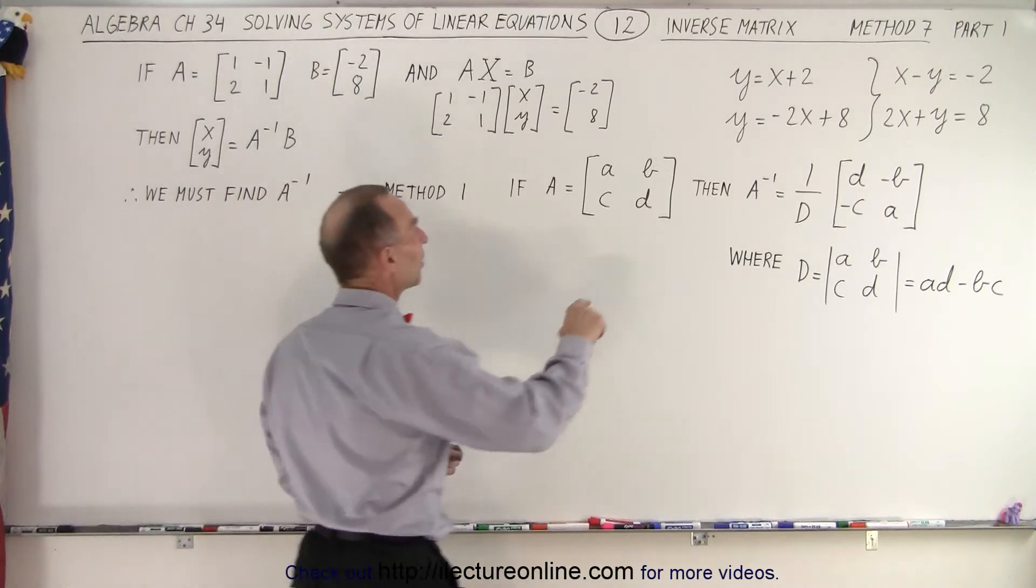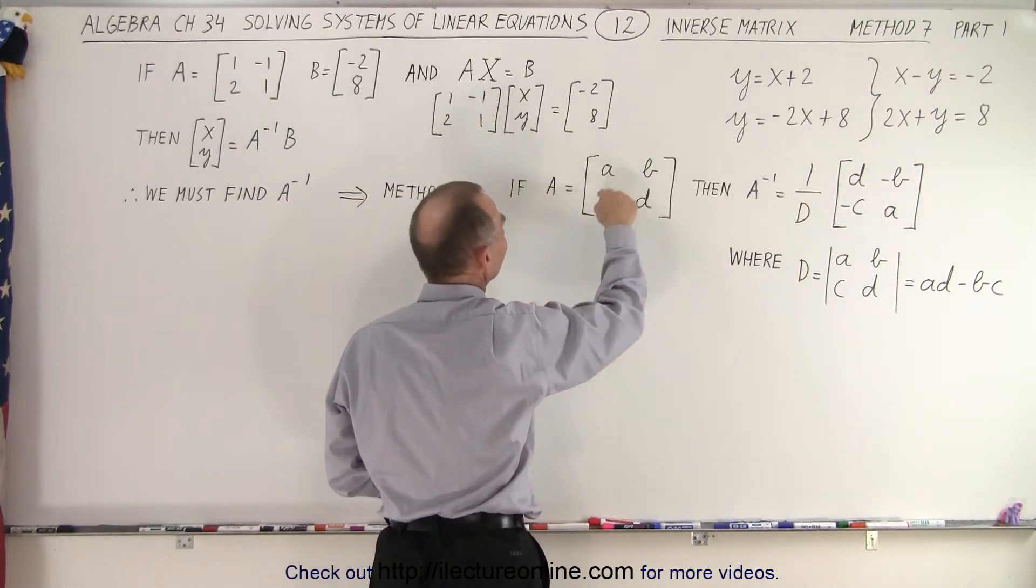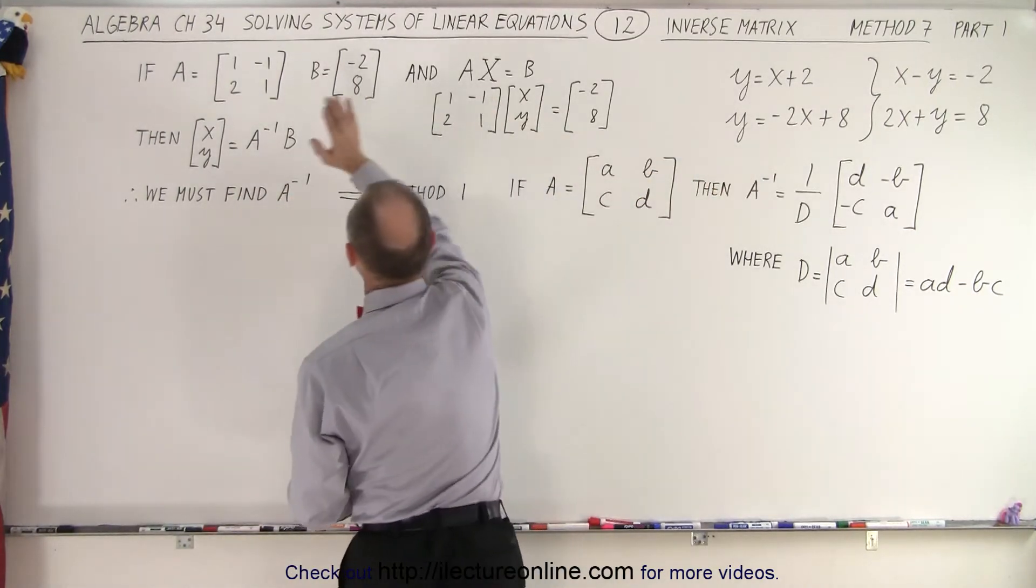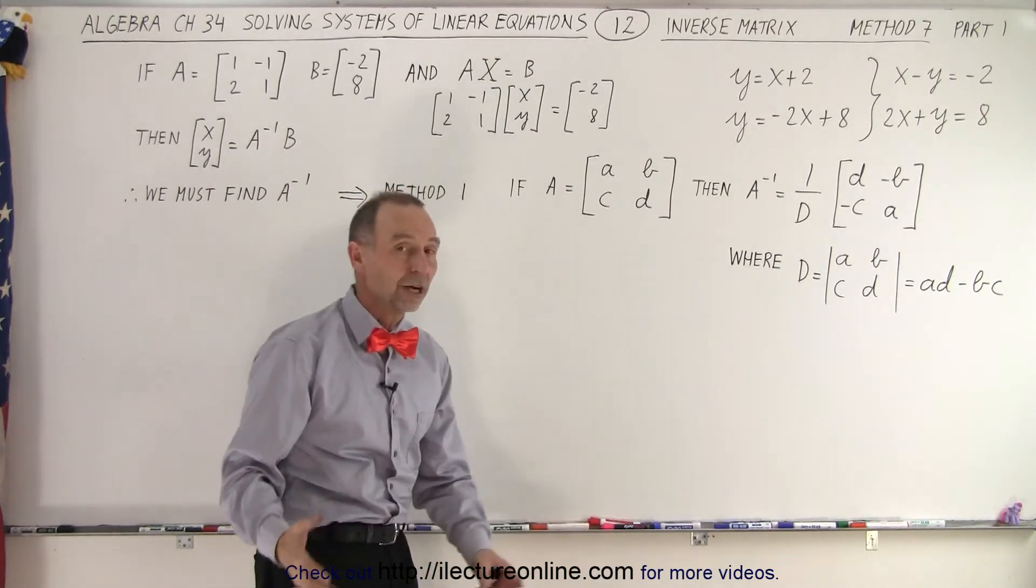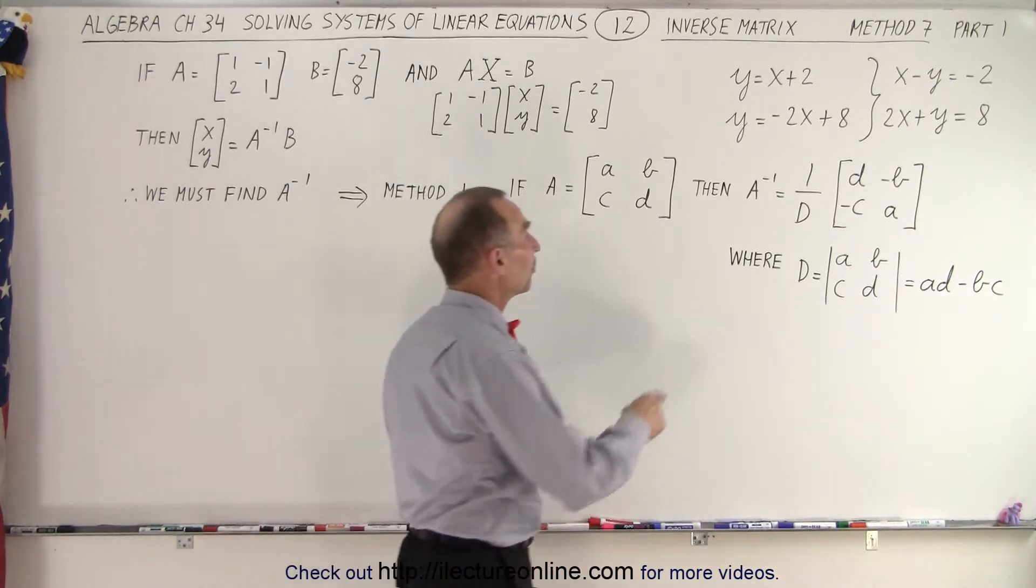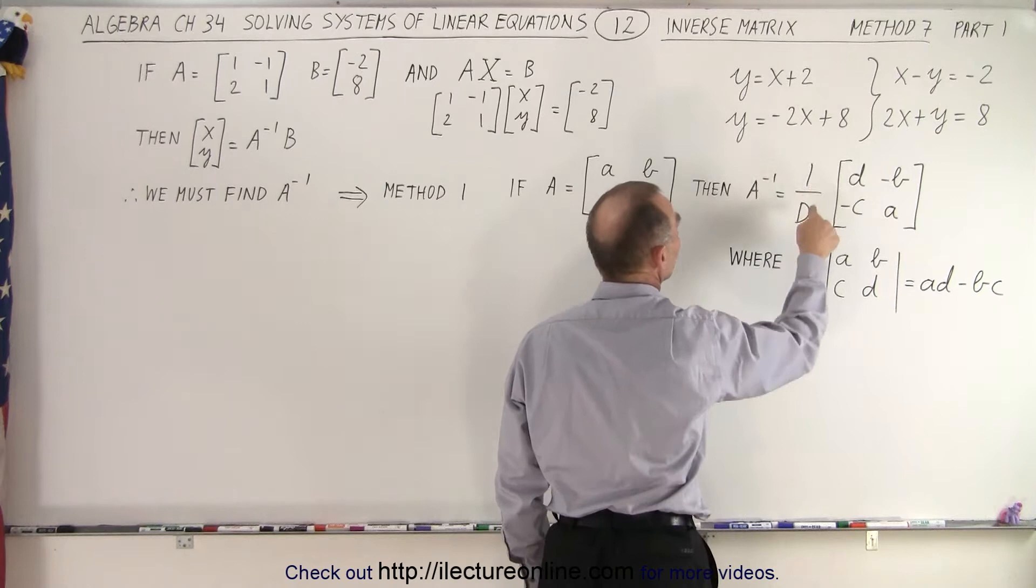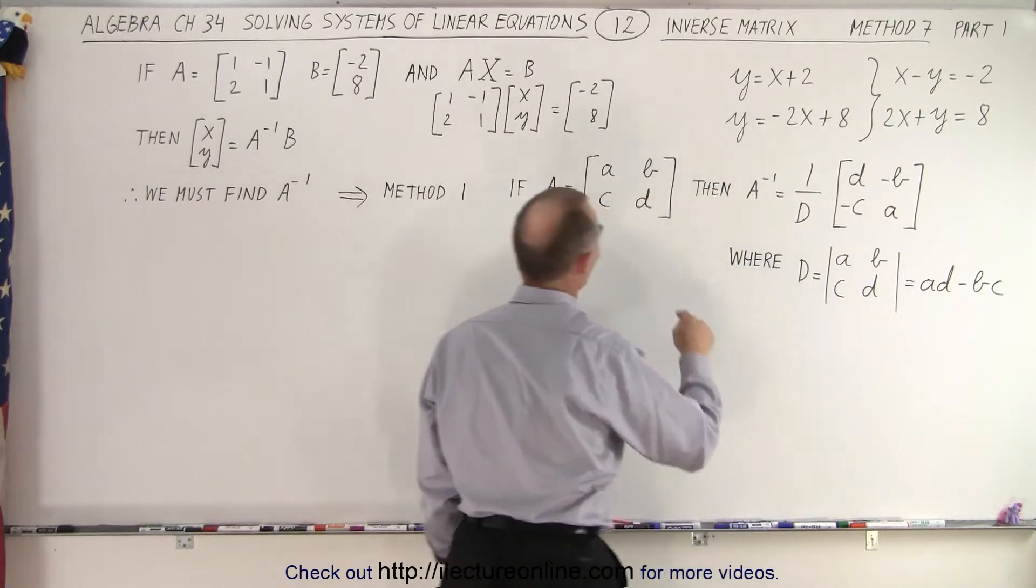So if we generalize the matrix A and A, B, C, and D simply represent four constants, whatever they are, then the inverse of the matrix is 1 over the determinant times this matrix. Now, notice,